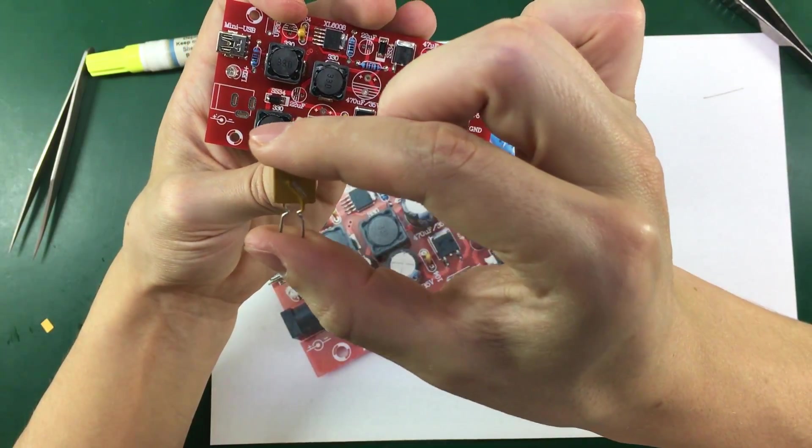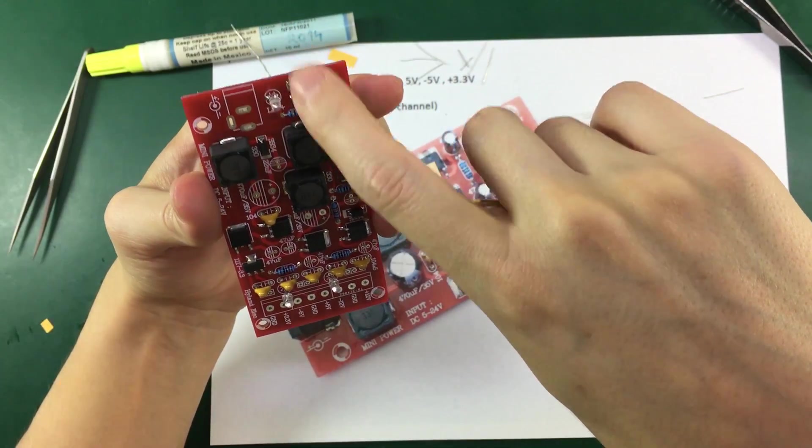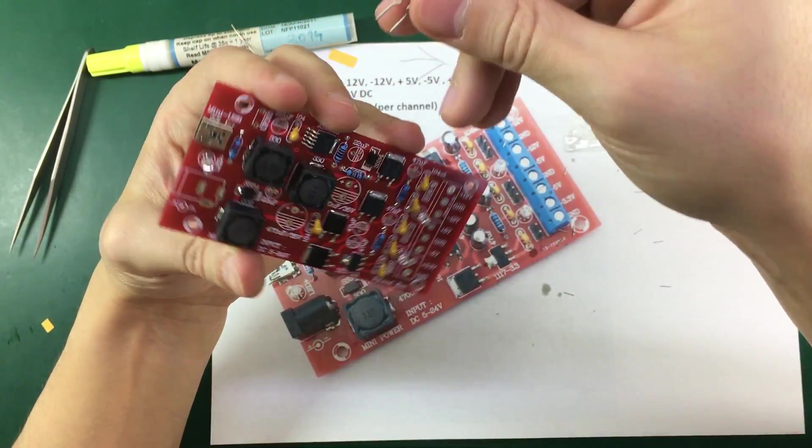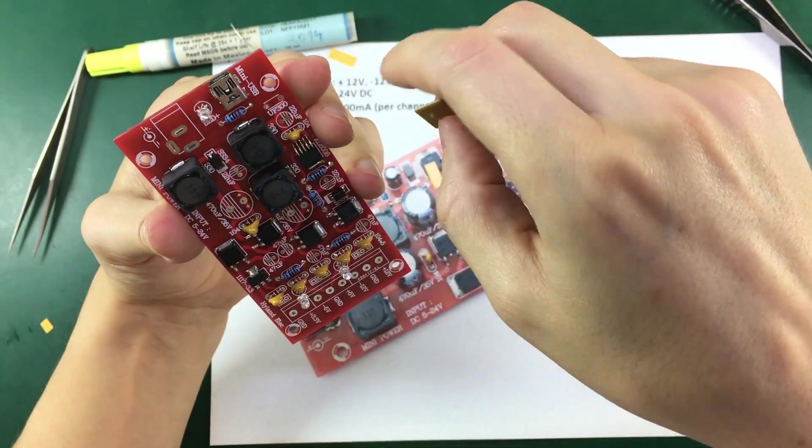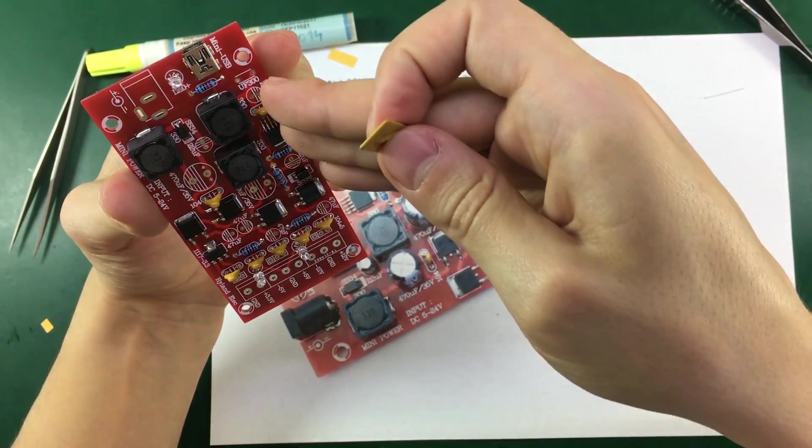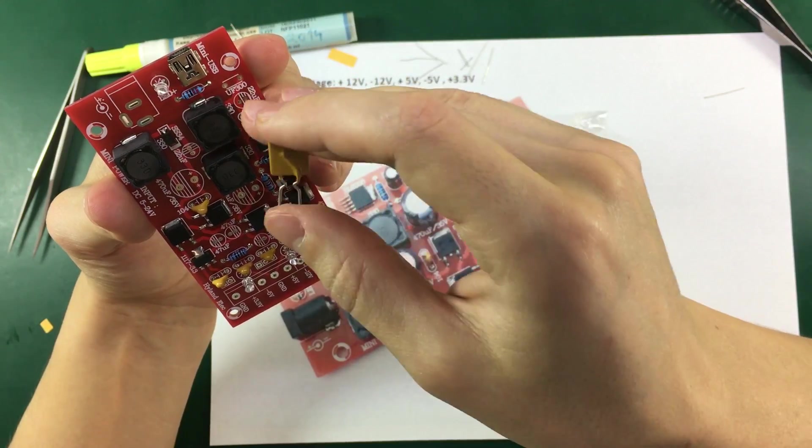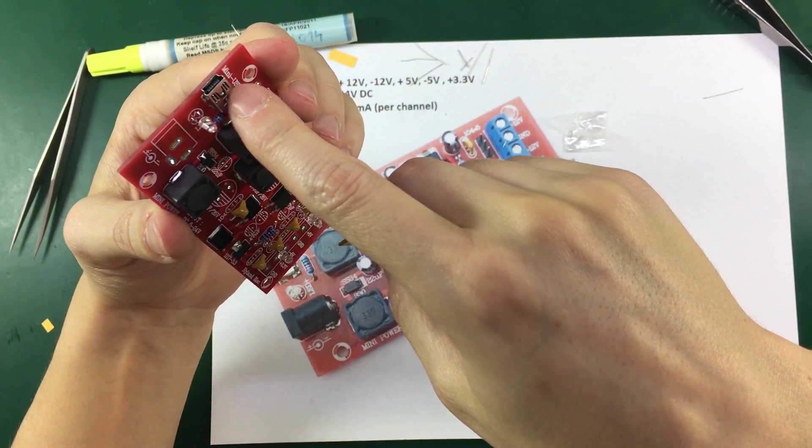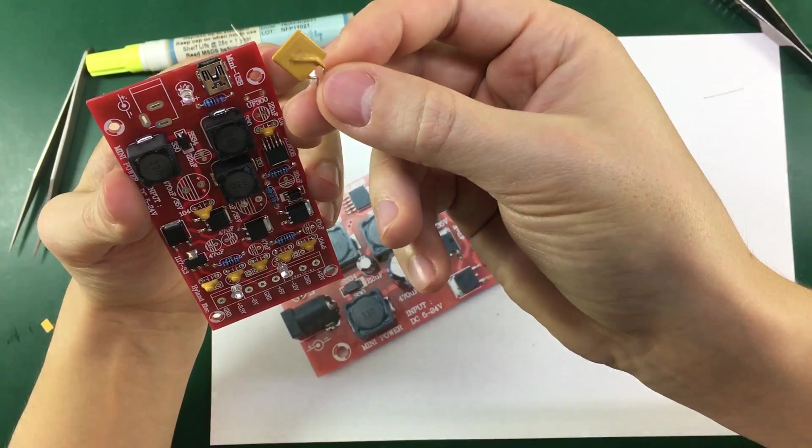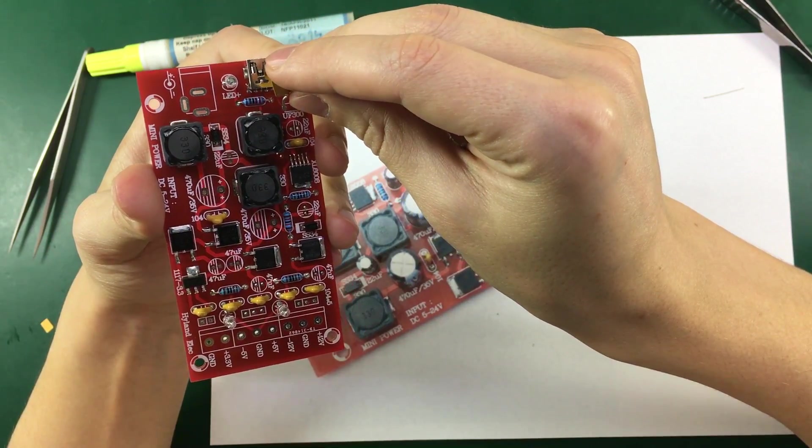Next I'm going to solder in this component which I believe it's a PTC. To limit the current from the input through this whole regulator. And it's marked US300. I'm not sure but it could be either a 300mA poly fuse. Or I doubt it's a 3A fuse because it will exceed very much the limit of the USB standard. So this is probably a 300mA poly fuse. And it will go in here.